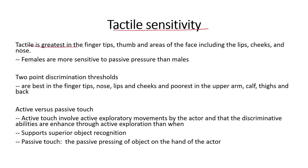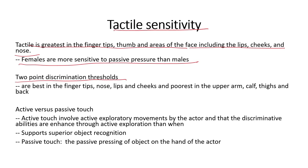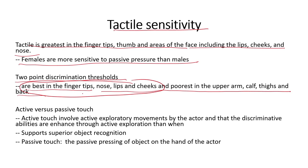Tactile sensitivity is greatest in the fingertips, thumbs, and areas of the face including the lips, cheeks, and nose. Females are more sensitive to passive pressure than males. Regarding two-point discrimination threshold — where two different pressure points can be distinguished — sensitivity is best in the fingertips, nose, lips, and cheeks, and poorest in the upper arm, calf, thighs, and back.